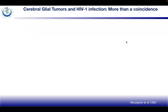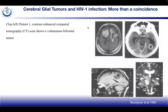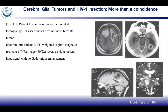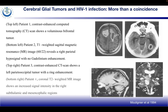Looking at the incidence of cerebral glial tumors: in the top left, Patient 1 contrast-enhanced CT scan shows a voluminous bifrontal tumor. In Patient 2, a T1-weighted sagittal MR image reveals a right parietal hyposignal with no gadolinium enhancement. Patient 3 has a contrast-enhanced CT showing a left parieto-occipital tumor with ring enhancement. Patient 4 has a coronal T2-weighted MR image showing increased signal intensity in the right subthalamic and mesencephalic regions.